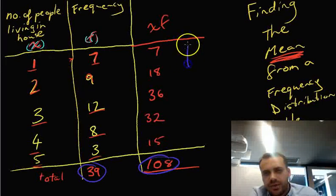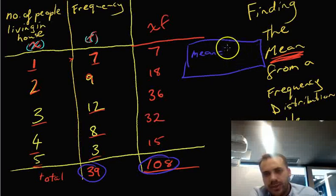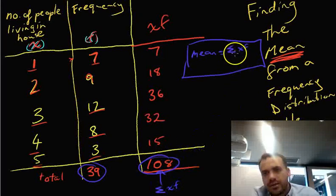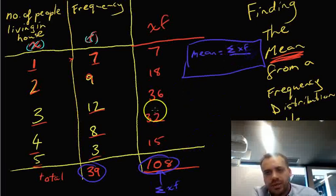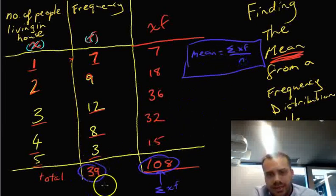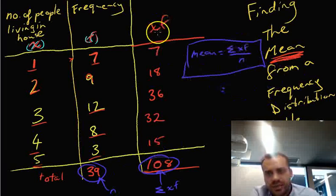Okay, here's our formula, the really important thing from today's lesson. The mean is equal to the sum of XF, that's this thing here. That means all of the XF numbers added together, divided by N. And that's this number here.